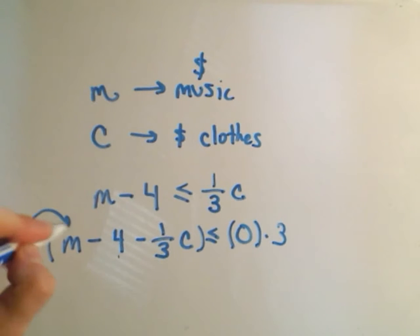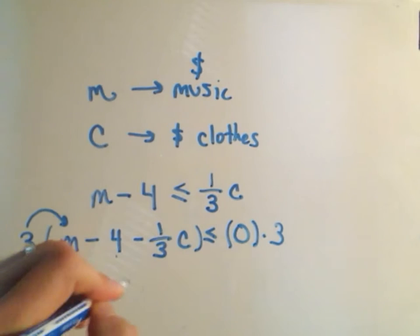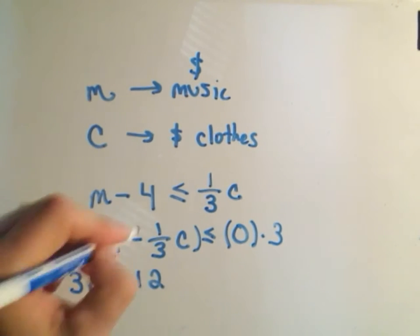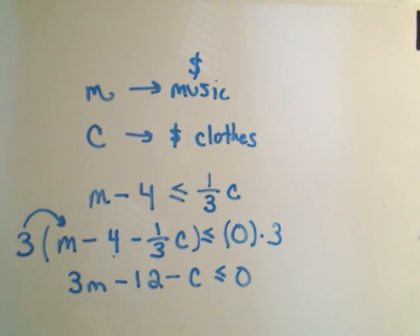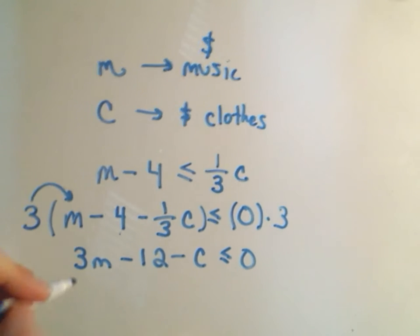And when we distribute, we'll get 3M minus 12, and then we'll get minus C less than or equal to zero.